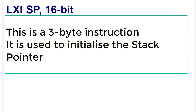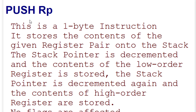The PUSH instruction — for example, PUSH B — is a one-byte instruction. It stores the contents of the given register pair onto the stack. When this instruction is executed, the stack pointer is first decremented and the contents of the low-order register are stored, then the stack pointer is decremented again and the contents of the high-order register are stored. So if we are storing BC, first C is stored, then B.